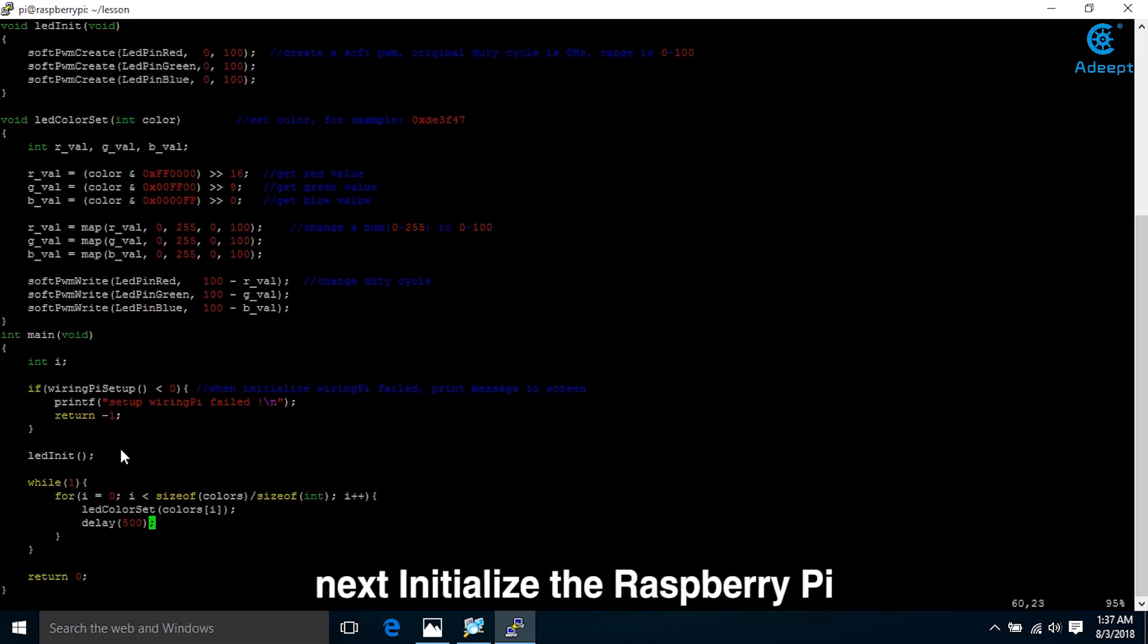Next, initialize the Raspberry Pi. When initialize the Raspberry Pi fails, print a message to screen, set up the Raspberry Pi field. While loop, execute the setting color. Then save and exit.